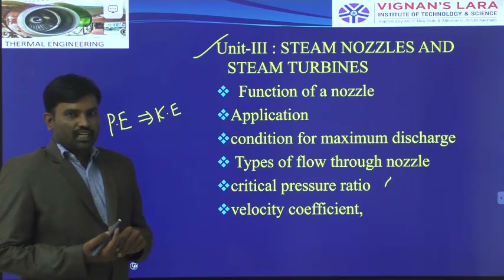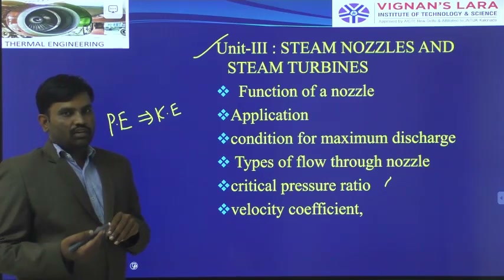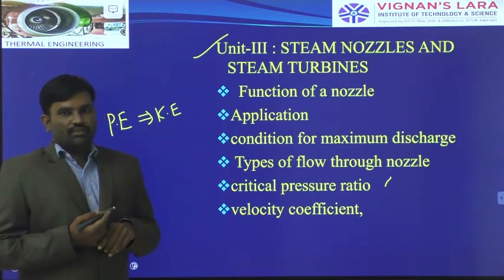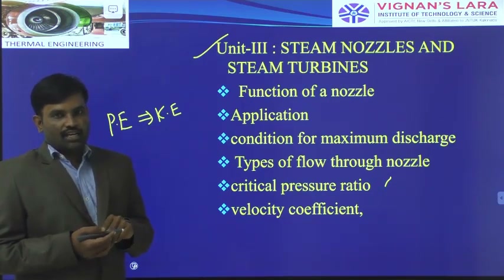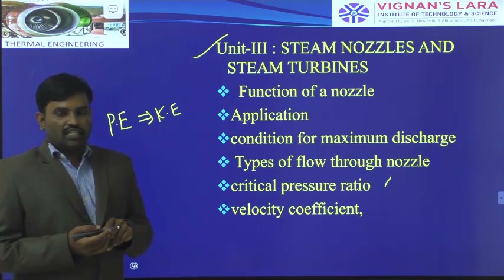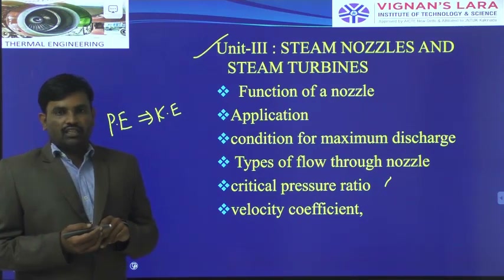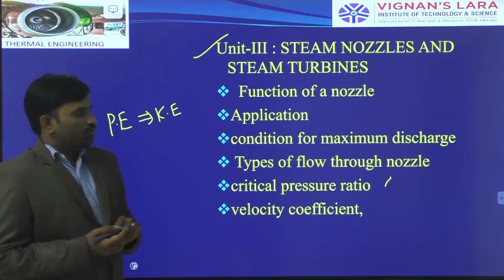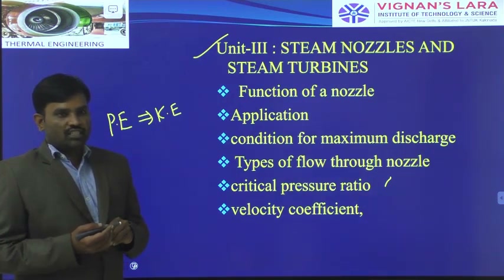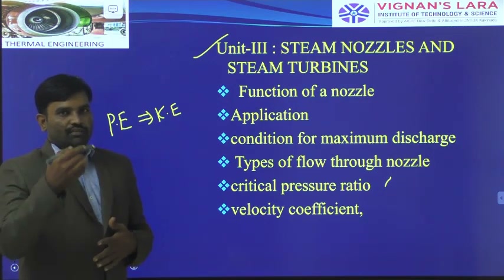What is meant by a turbine? It is a circular wheel. Over the circumference of the wheel we arrange a number of blades. We use two different types of turbines: impulse turbine and reaction turbine. In case of a turbine, it consists of blades, and the high velocity steam strikes the blades of the steam turbine.